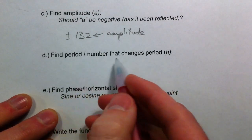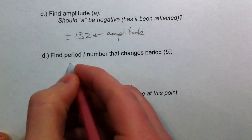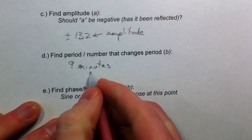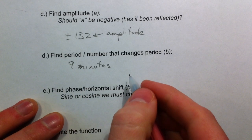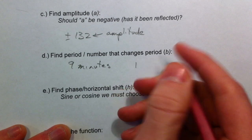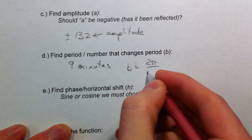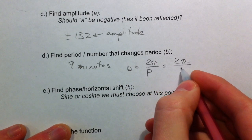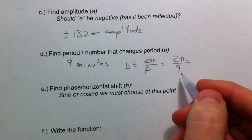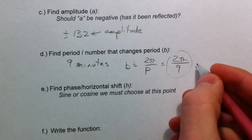To find the period and the b value: after everyone was loaded it took 9 minutes to go all the way around. So let's say our time t is in minutes. B equals two pi divided by the period, so b equals two pi divided by 9. We'll write that as 2π/9. You could do it in seconds if you wanted — just multiply by 60 — but we'll keep t in minutes.